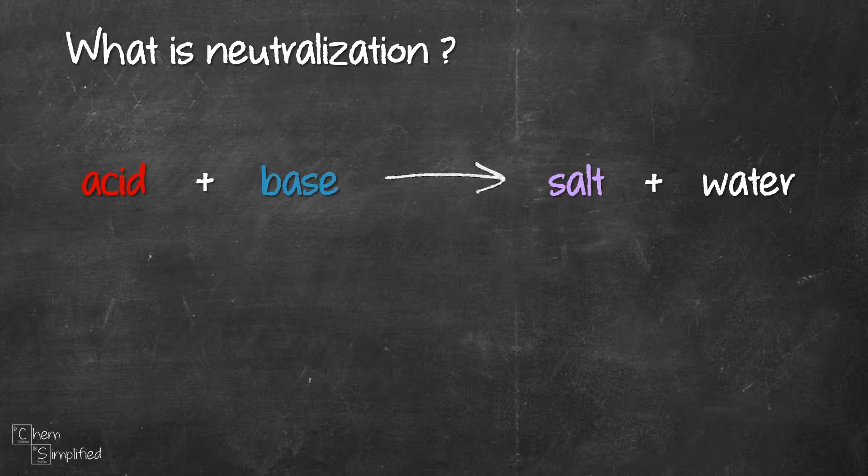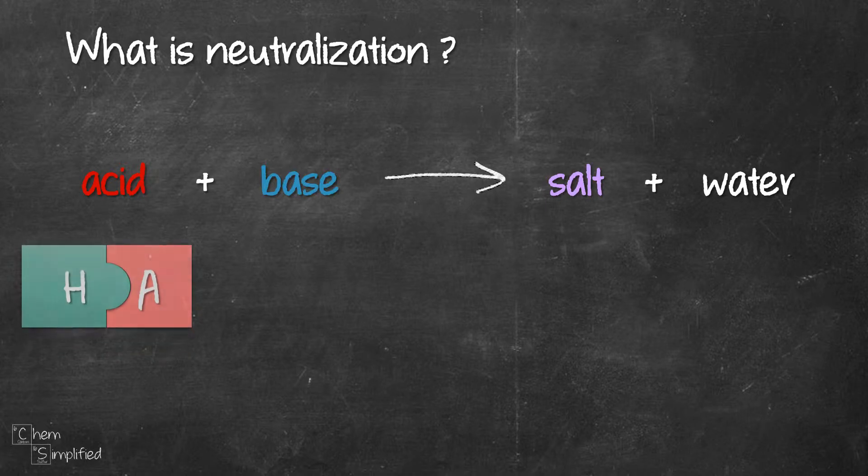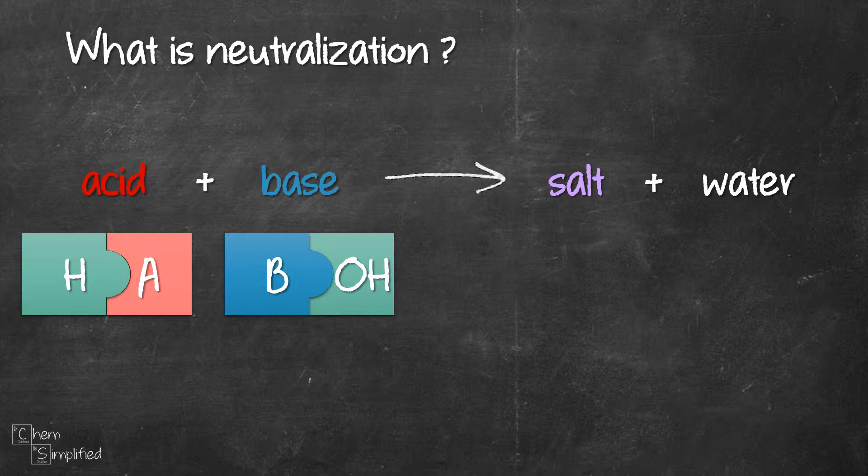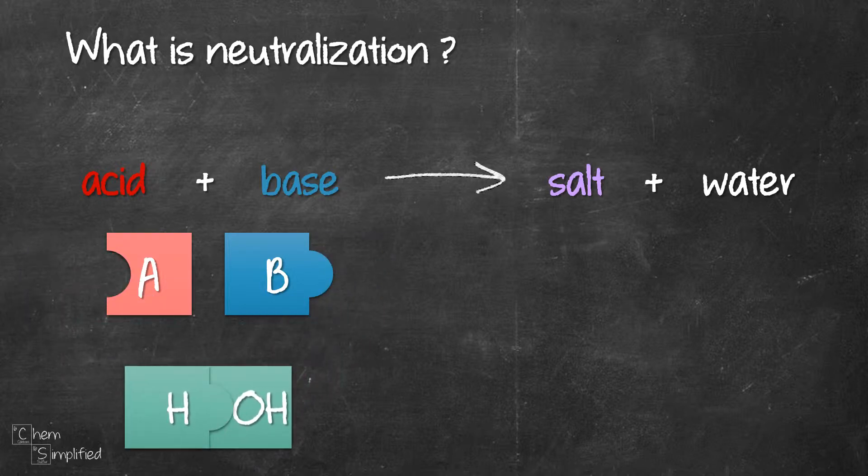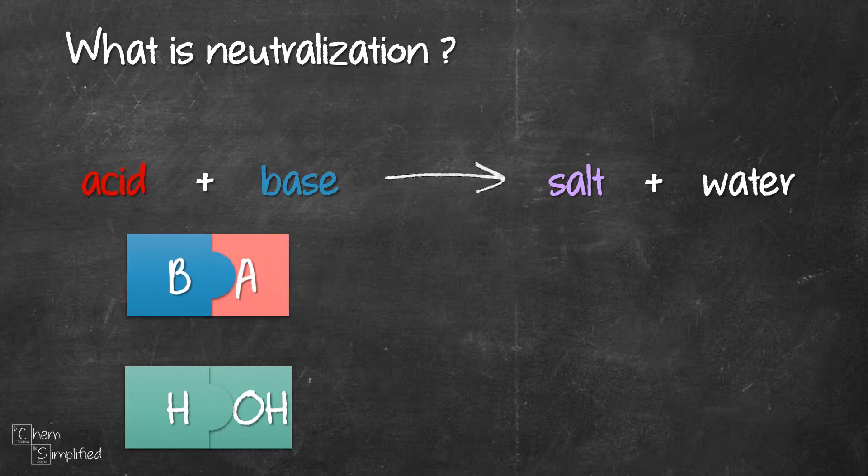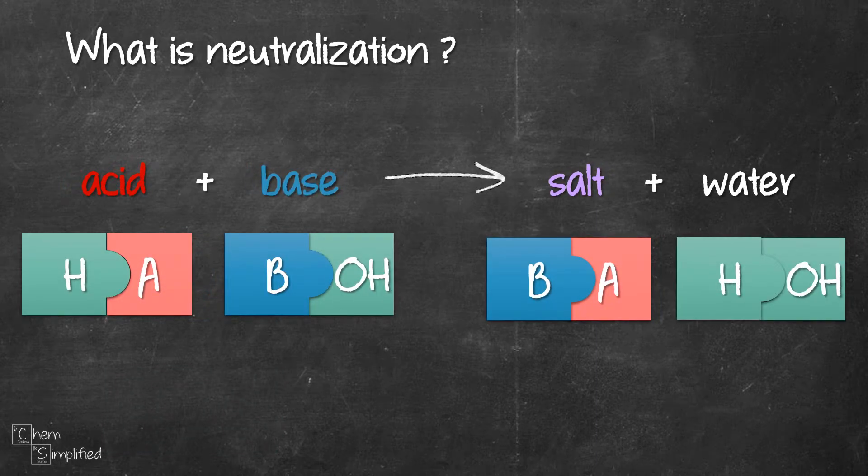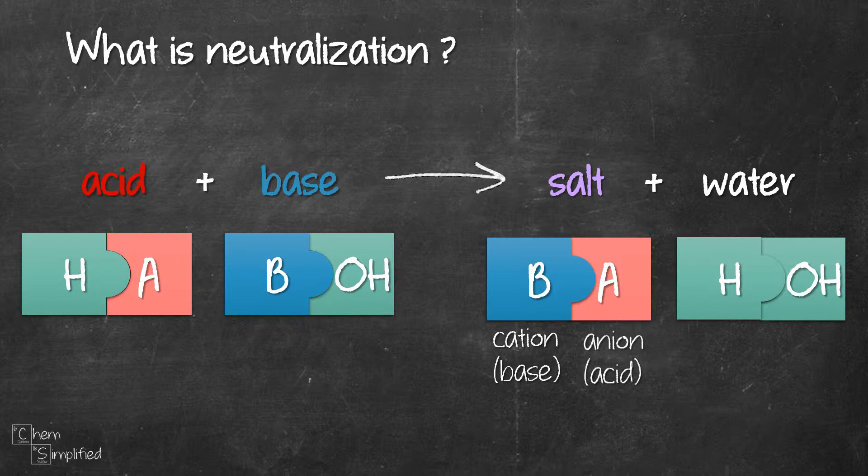Recall that Arrhenius acid can be represented as HA while Arrhenius base is BOH. What happens in a neutralization equation is that the H from acid and OH from the base will combine and form water which is H2O, whereas the A from acid and B from base will combine to form salt. So the formula of salt is basically made out of the cation from the base and the anion of the acid.